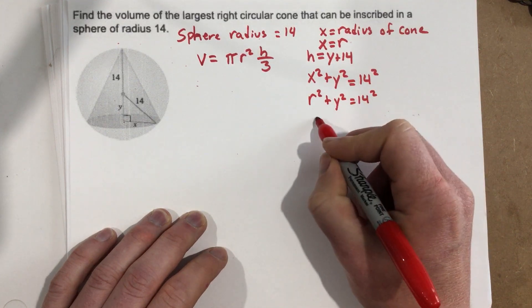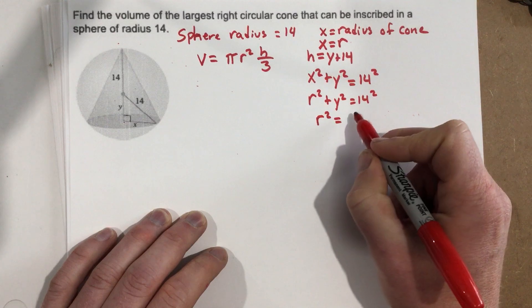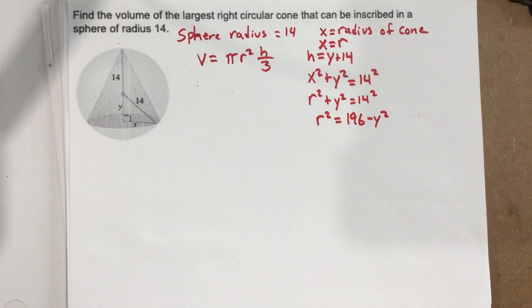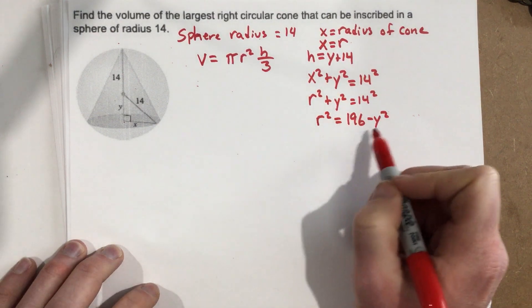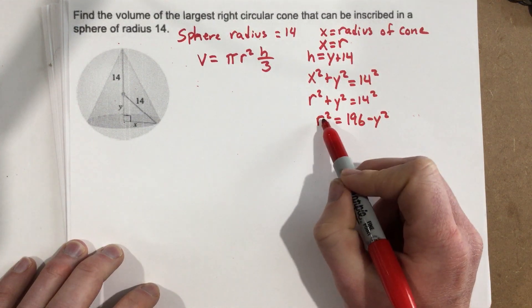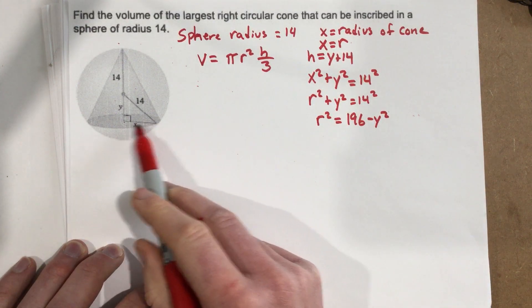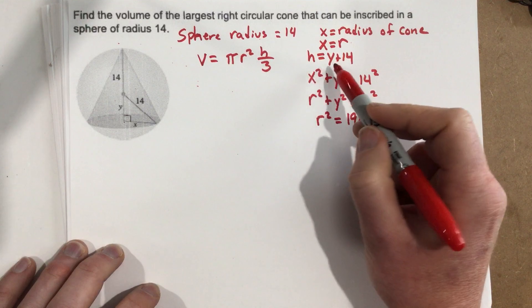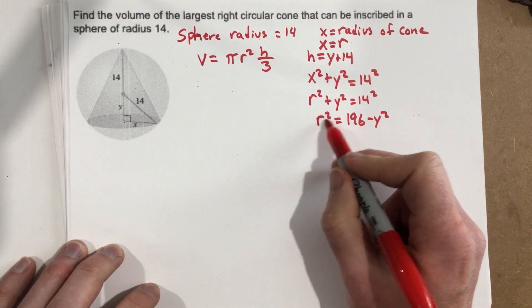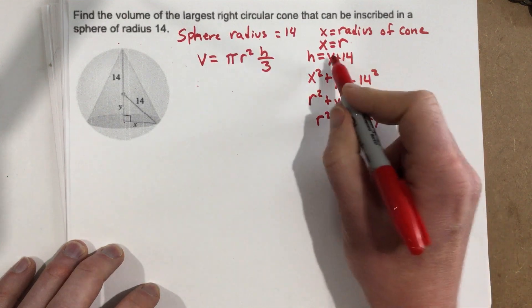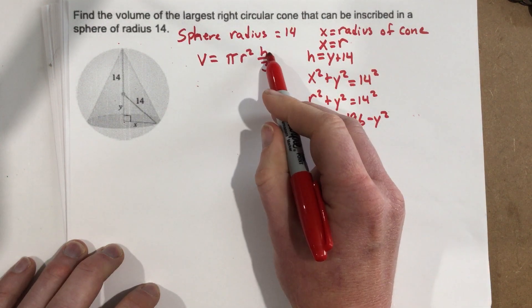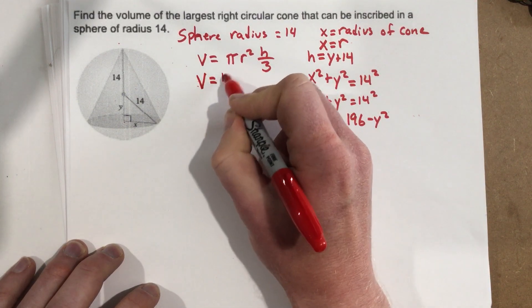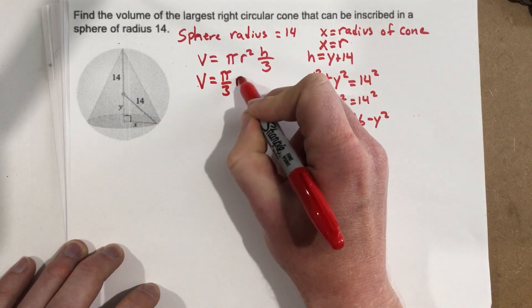We can subtract y² over to get r² = 196 − y². So r² was replaced using x, since that's really the radius of the cone, and h is the height, which is y + 14. Now both r² and h are in terms of y, so we can replace them in the volume formula. I'm going to move the 3 onto the π to make a constant: π/3 · r² · h.